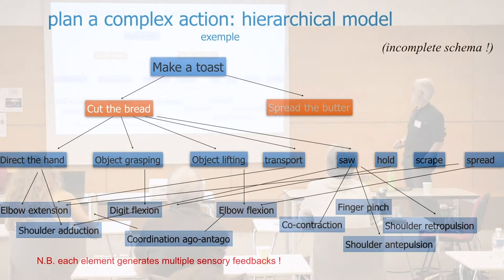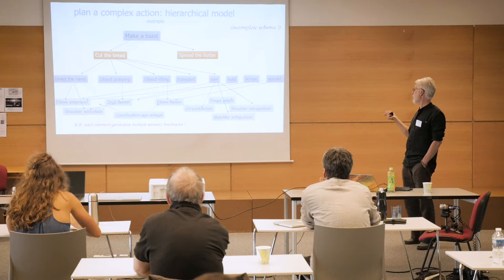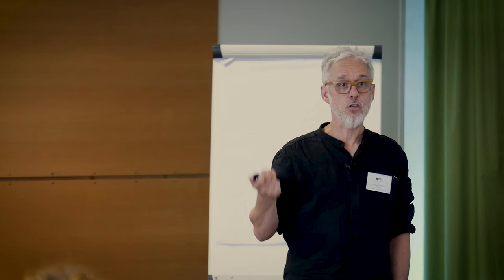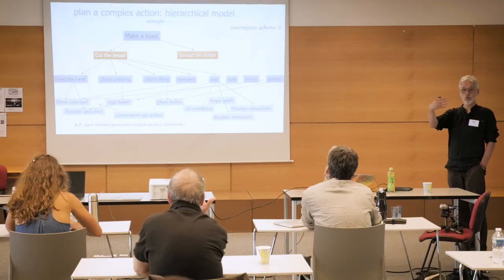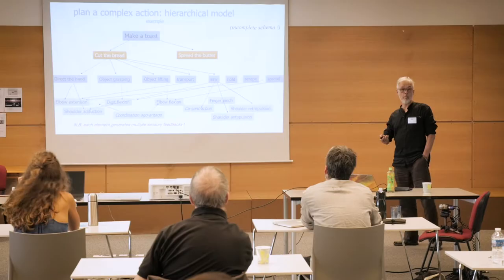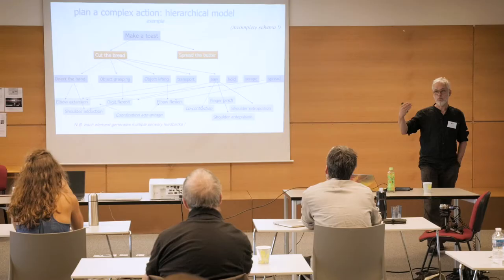We do not intentionally produce action commands at the level of 'elbow extension' or 'digit flexion.' We simply think 'I am making toast' and the rest unfolds fairly automatically. This illustrates the hierarchical model of action, unfolding until we produce actual finger grip commands. One key concept is the motor program: asked to write a sentence with the right hand, the right arm, the left hand, the mouth, or the foot, everyone recognizes it is the same person writing — showing a unique motor representation independent of which motor commands are delivered.